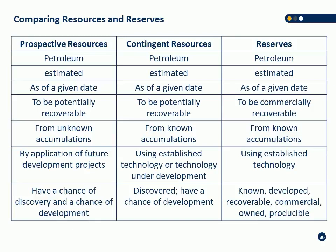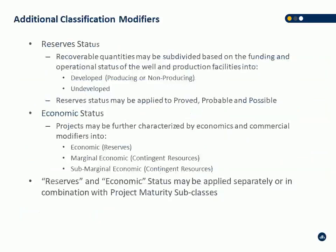The key comparisons: potentially recoverable versus commercially recoverable — that's resources versus reserves; known accumulations versus unknown — that's reserves and contingent versus prospective; and the type of technology required and risks associated. Additional classifications: reserve status gets back into developed — which can be producing and non-producing — and undeveloped. Reserve status can be applied to all three categories of reserves: you can have proved developed, probable developed, possible developed, and the same with undeveloped.